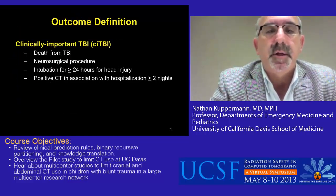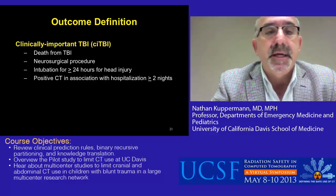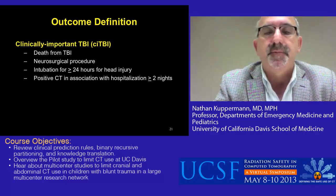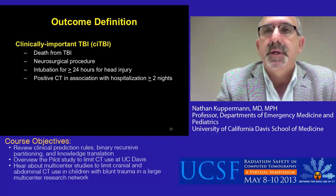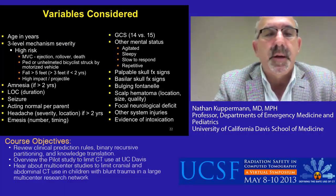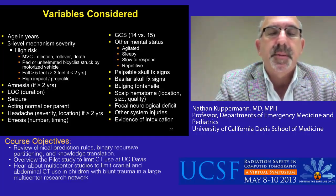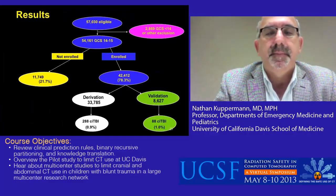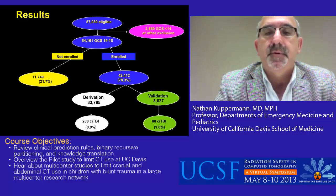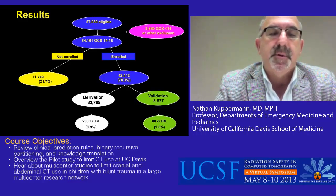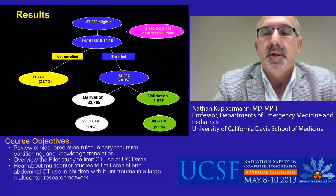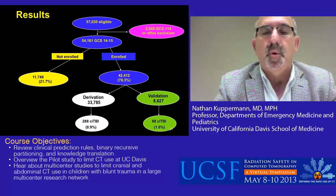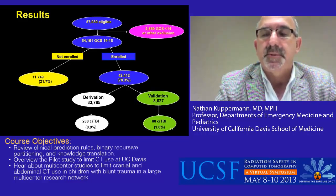For this study we had one outcome definition: clinically important traumatic brain injury, defined by death from TBI, a neurosurgical procedure, intubation for 24 hours or more for the head injury, or a positive CT scan in association with hospitalization for two or more nights for treatment of that head injury. We enrolled more than 40,000 patients, giving us the power to examine many variables in detail. There were 57,000 eligible patients, of whom 54,000 had a GCS of 14 to 15. We enrolled 78% of them. The two groups — enrolled and missed — were very similar in rates of positive CT and other clinical parameters. We derived rules in children younger than 2 and older than 2 in approximately 34,000 patients, and validated these rules in approximately 9,000 patients.